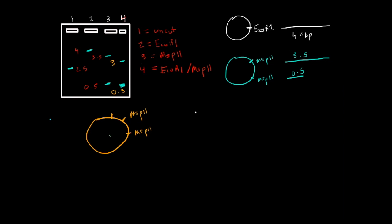And this is another cut site, because then you get the same lengths that you would as we did up here. So that leaves the ECO-R1 cut site to be here, because it is one cut site that is four kilobase pairs long, and if it's 0.5 away from the one MSP2 cut site.